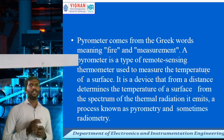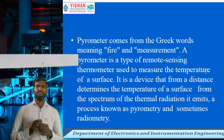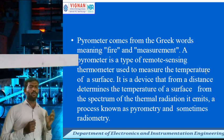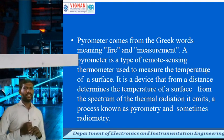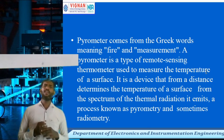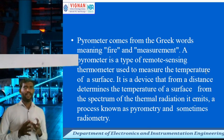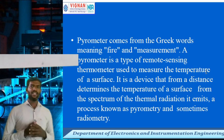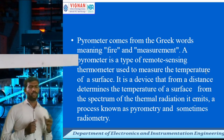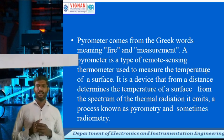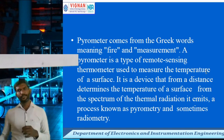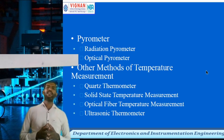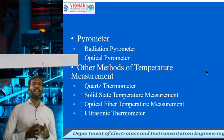Pyrometer is a Greek word — 'pyre' and 'metron' — meaning fire measurement. It is a remote sensing type thermometer used to measure the temperature of a surface. This device measures temperature by thermal radiation, a process known as pyrometry, and is sometimes called a radiometer. Pyrometers are classified into two basic types: radiation pyrometer and optical pyrometer.